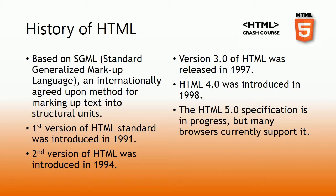The first version of the HTML standard was introduced in 1991. The second version was introduced in 1995. The third version, called Wilbur, was introduced in 1997. The fourth version, called Cougar, was released in 1998.